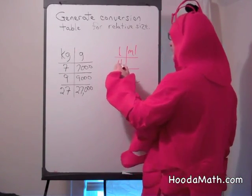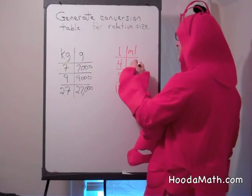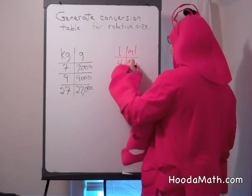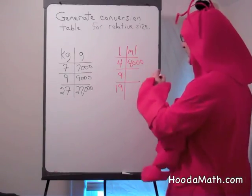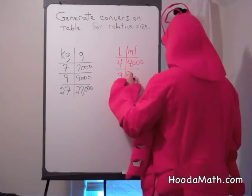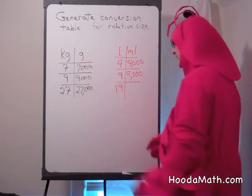So, if you have 4 liters, you have how many milliliters? 4,000. If you have 9 liters, how many milliliters? 9,000.